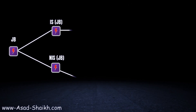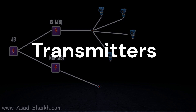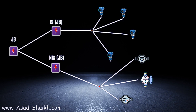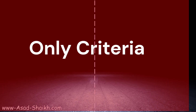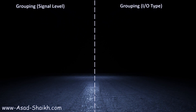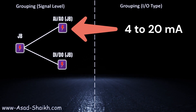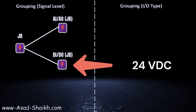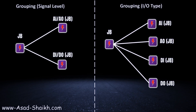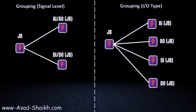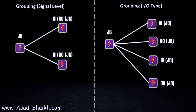An IS JB is where IS devices such as transmitters are connected, and an NIS JB is where devices like solenoid valves and magnetic flow meters, which require higher power, are allocated. Beyond that, certain clients require further segregation by signal level — for example, AI and AO (4–20 mA signals) in one JB, and DI/DO in another. Some clients, such as on Saudi Aramco projects, require AI, AO, DI, and DO junction boxes separately. Generally though, IS and NIS JBs are the most cost-effective choice.